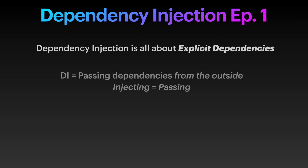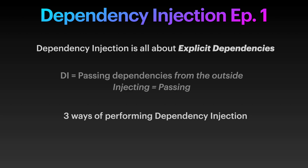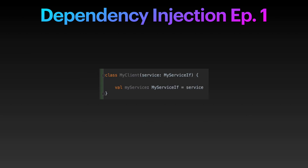So now we know what a dependency is, and we just found out what injection means — passing from the outside. Three main ways. First, the most classic and obvious one: through constructor parameters. This is called constructor dependency injection. You've been performing that ever since you passed a class as an argument through a constructor. This is actually the most used and best way of passing a dependency into a class. It's super clear from the constructor what the dependencies are, so we know what we need to give this class in order to function properly.